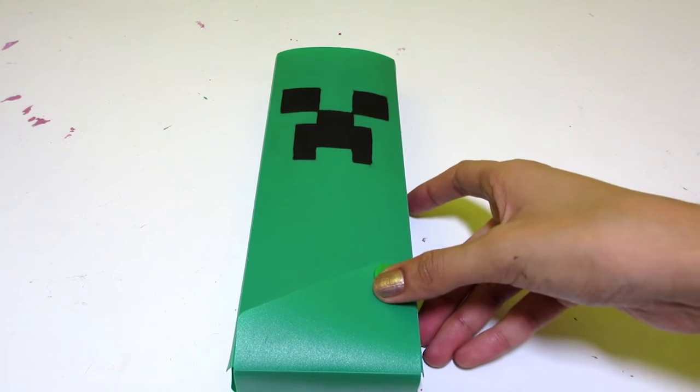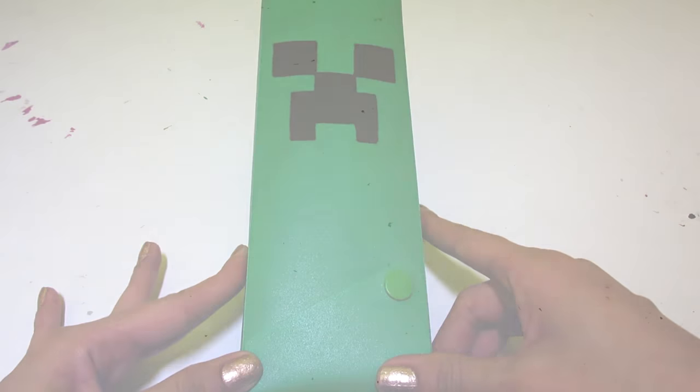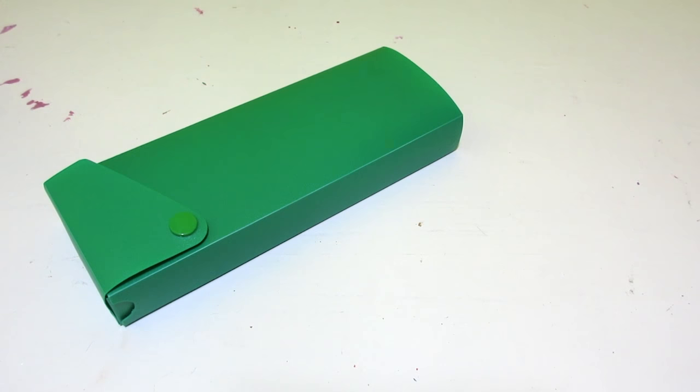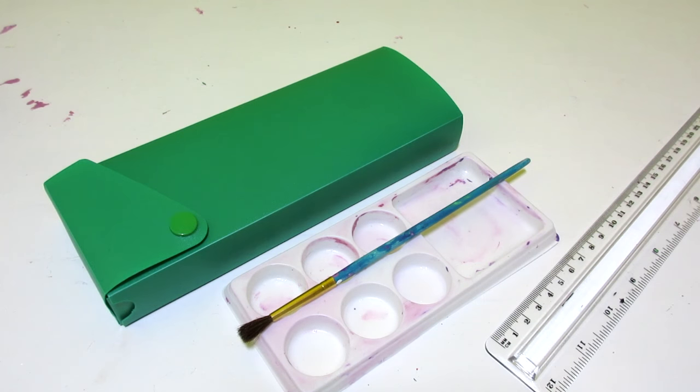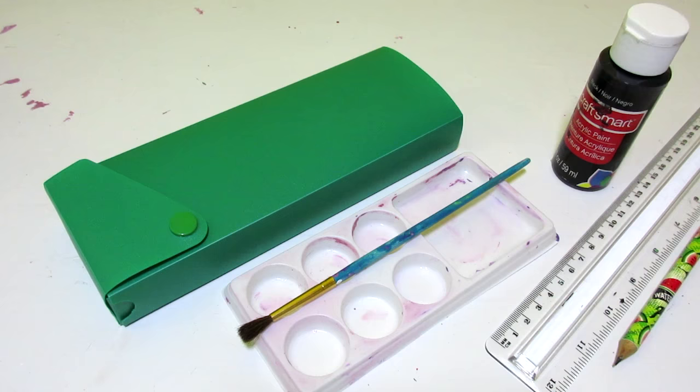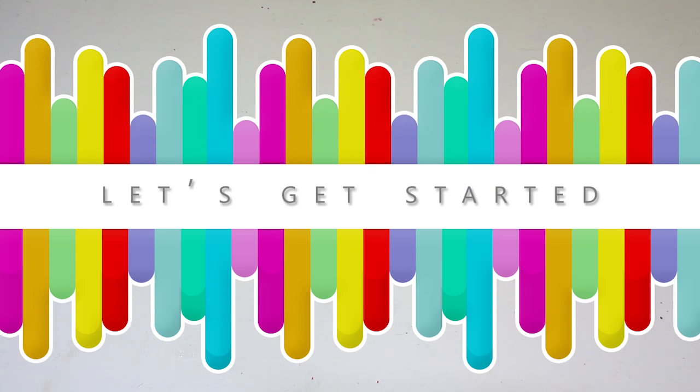First, I'm going to start off by showing you how to make this Creeper pencil case. So here's what you'll need: a green pencil case, a paintbrush and a mixing tray, a ruler, some black paint, a pencil and some tape. So let's begin.